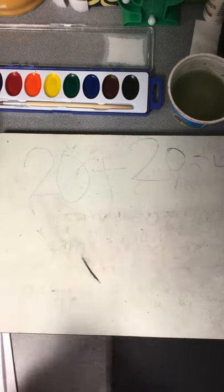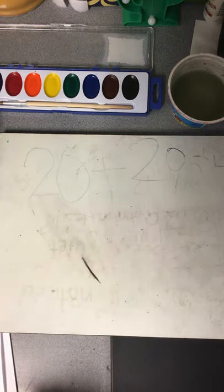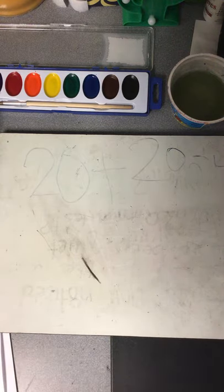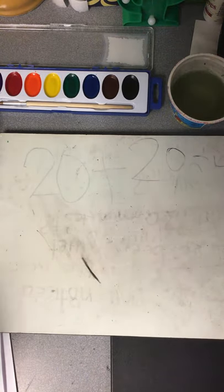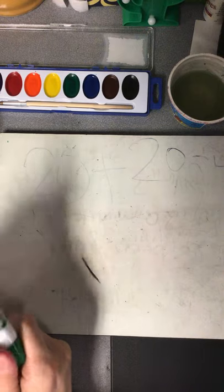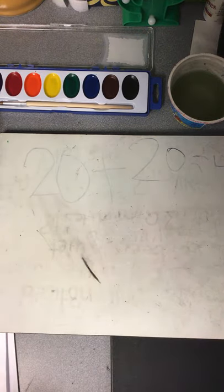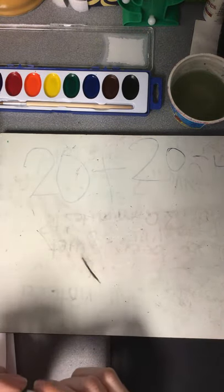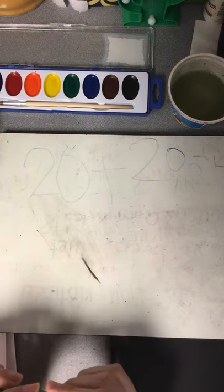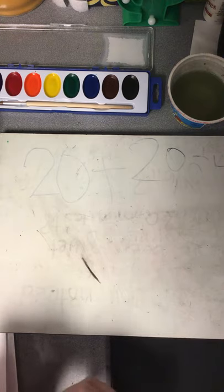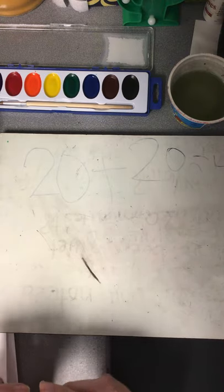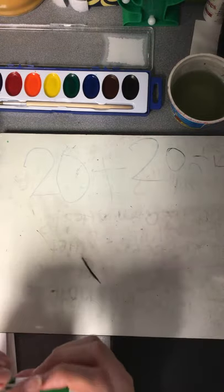We usually group shapes in art class into two groups — geometric, which we learned about last week: our squares, our circles, our triangles. Those are shapes that we can make using straight lines and they usually have corners. But organic shapes are a little different — they do not usually have straight lines, they do not usually have corners, and they're not usually connected by straight lines.